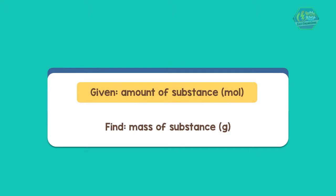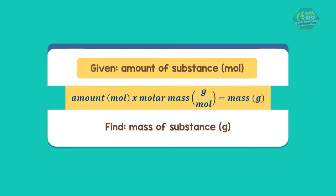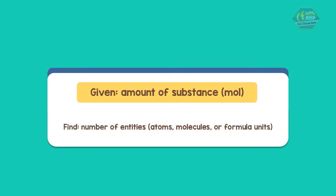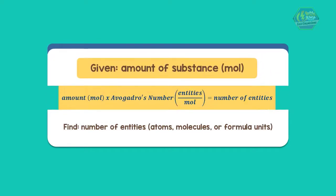If we are given amount of a substance, we just need to multiply the amount in moles by the molar mass in grams per mole to get the mass in grams of a substance. Similarly, multiply the amount by Avogadro's number to get the number of entities.